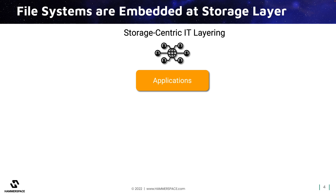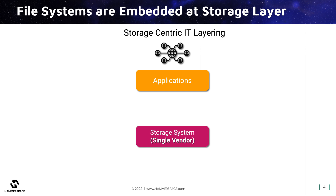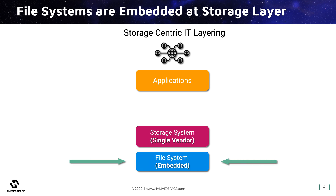Most people only think about file systems when they need to find their data. Where do they look? They go to a storage platform. But storage is hardware that houses the bits scattered across disks or chips or other components. The data that people and applications actually interact with are only visible in a file system — the metadata layer within the storage platform that translates those bits into files and folders that they can deal with.